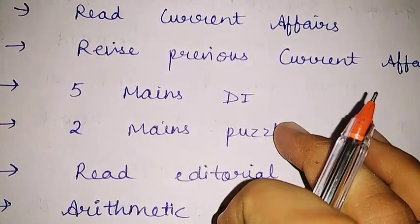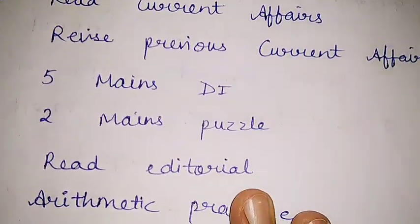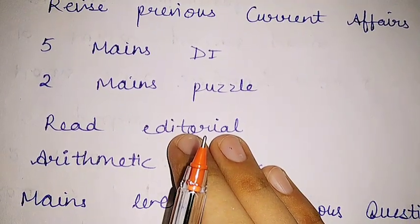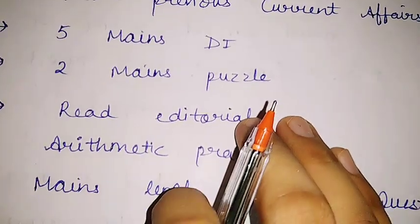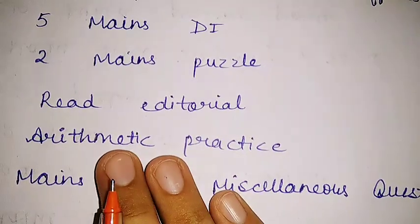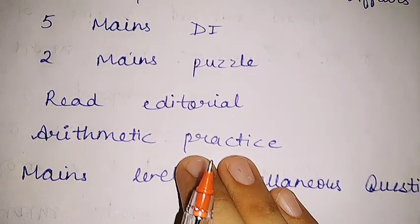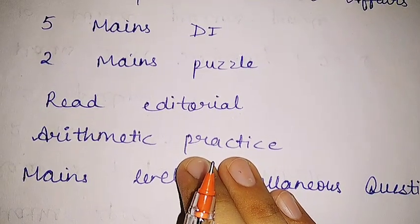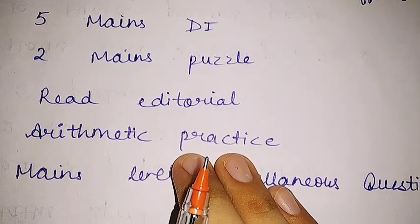level puzzles. For this material, you can go for the mains mock test. Then there is reading editorial for English and focus on vocabulary also, because in mains examination questions are based on vocab. Then there is arithmetic practice - try to practice arithmetic because it will be helpful in RRB PO prelims, RRB office assistant prelims, plus